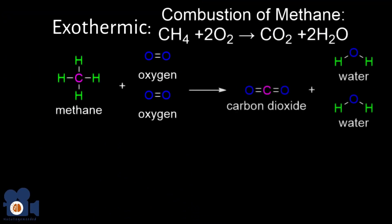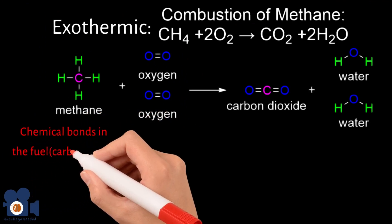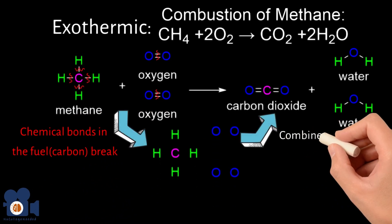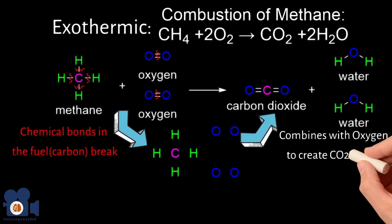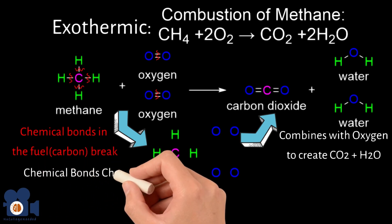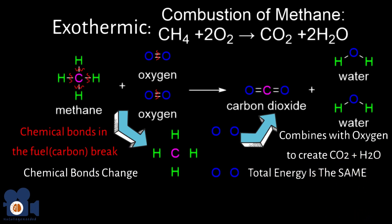During combustion, chemical bonds in the fuel, such as hydrocarbons in wood or gasoline, break as the fuel combines with oxygen to form new bonds in combustion products like carbon dioxide and water. The overall result is a release of energy driven by the rearrangement of the chemical bonds. The first law tells us that even though the chemical bonds change, the total energy within the system and its surroundings remains constant.